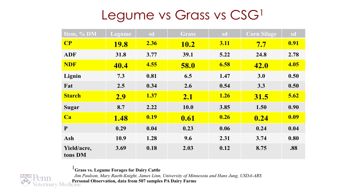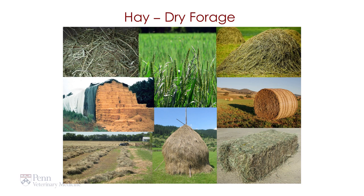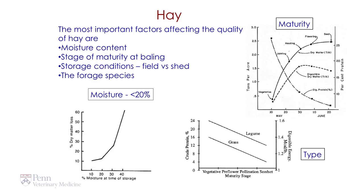So the main difference: legumes have high protein and high calcium; grasses have lower protein, higher fiber, and lower calcium. Corn silage is a grass but because it contains ears of corn, it has a higher starch content. Considering hay — the dry forage — it can be stored in stacks or bales. The key factor affecting hay quality is moisture content. If the hay is greater than 20% moisture when we make those bales, it will mold and worse, it can heat and burn. So it has to be under 20% moisture or over 80% dry matter.